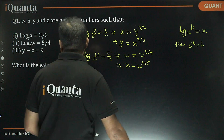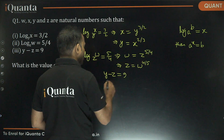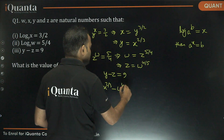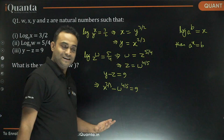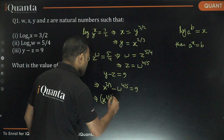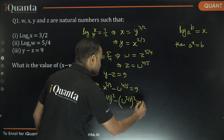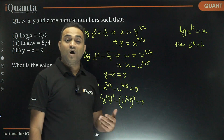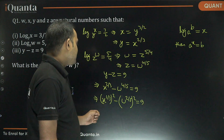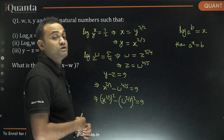Now we need to find the value of X minus W. We know that Y minus Z is equal to 9, so X to the power 2 by 3 minus W to the power 4 by 5 is equal to 9. We can write this as (X to the power 1 by 3) squared minus (W to the power 2 by 5) squared equals 9. Since X and W are natural numbers, X to the power 1 by 3 and W to the power 2 by 5 will also be natural numbers.